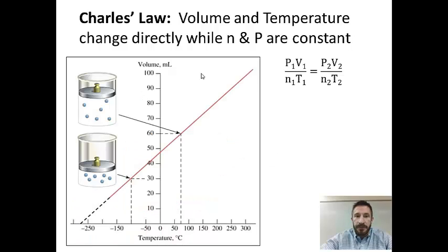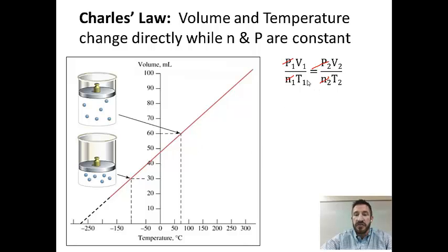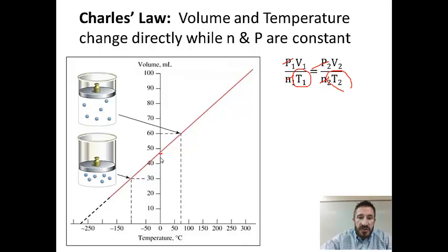The relationship between volume and temperature is direct. Volume over temperature equals volume over temperature — as you increase temperature, volume changes directly. One important point: when doing these problems, you always need to convert temperature to Kelvin. If we leave the temperature in Celsius, the linear relationship would stop around 40–50 degrees Celsius.